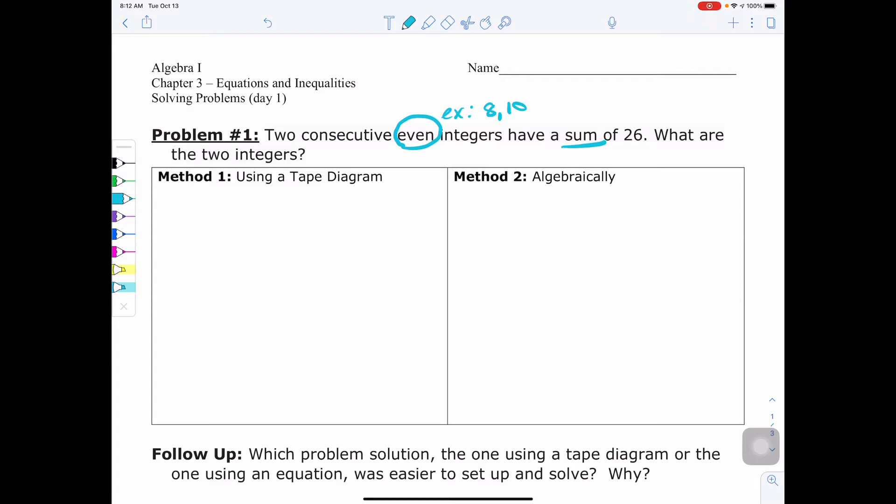So we have two methods we're going to show you. One is using a tape diagram, which you're going to recognize from using in grades previous. And method 2 is what we're going to concentrate on more now that you're in algebra, which is solving algebraically. You can use either method or a combination of the methods. But everyone should be able to use method 2 absolutely to solve problems like this, because most questions will ask you to solve it algebraically.